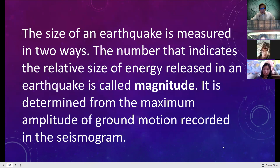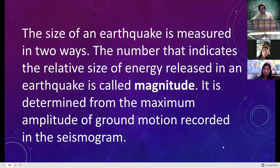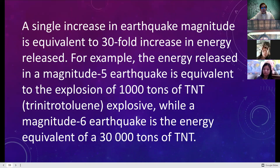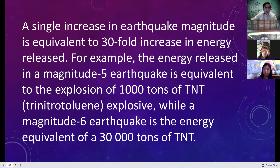The size of an earthquake is measured in two ways. The number indicating the relative size of energy released in an earthquake is called magnitude. It is determined from the maximum amplitude of ground motion recorded by the seismogram. A single increase in magnitude is equivalent to 34 times more energy released. For example, the energy released in a magnitude 5 earthquake is equivalent to the explosion of 1,000 tons of TNT.